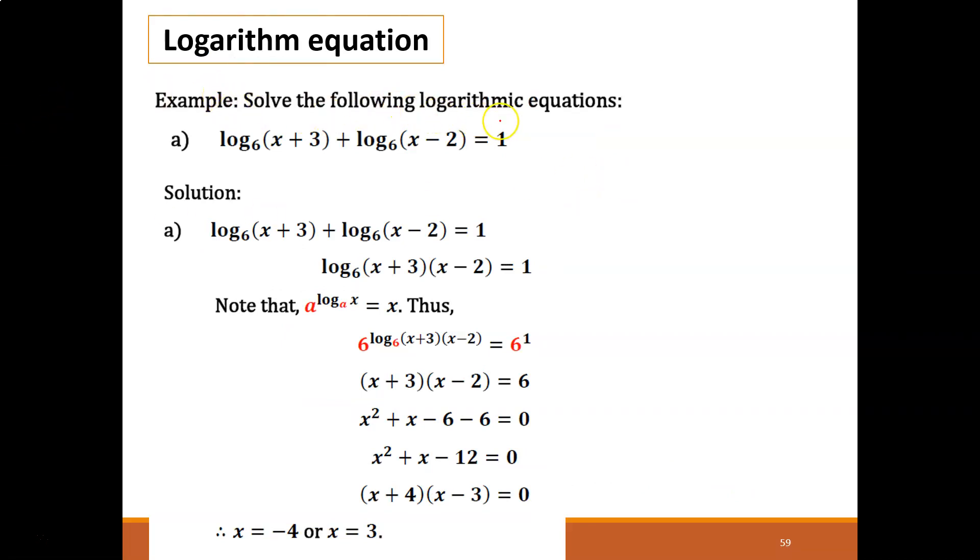Logarithm equation. Example: Solve the following logarithmic equation. Log base 6 of x plus 3 plus log base 6 of x minus 2 equals 1. What happens is you don't have to change the base to 10 or e, since we already have all base 6. So you don't have to change the base. What happens is, since the base is the same, we have the same base log base 6, you can just multiply it. Why do we need to multiply? Because this one we have plus. So log base 6 of x plus 3 times x minus 2 equals 1. Note that we have this property.